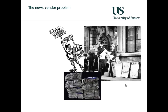The news vendor problem can go into quite some detail, but the general principles have been shown here. The way to approach this is to work out the underage and overage costs, then the critical ratio, and look up the result in the standard normal table. This works for most distributions and most problems, and in most cases you do not need to derive or create your own distribution curve.